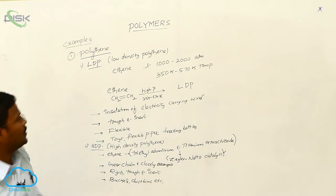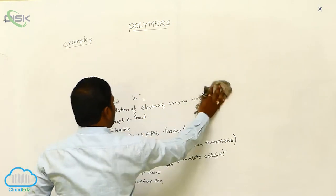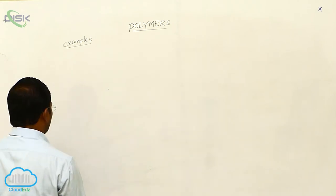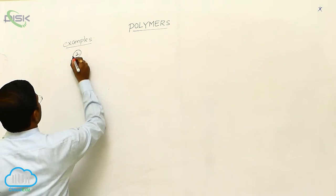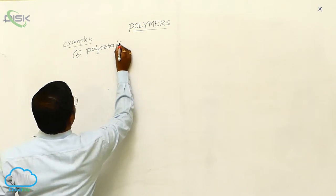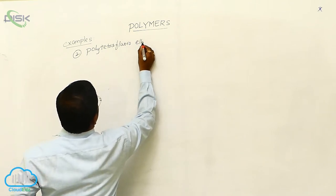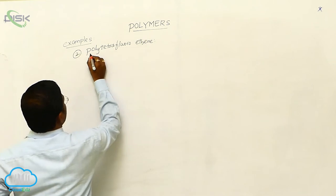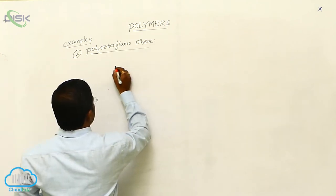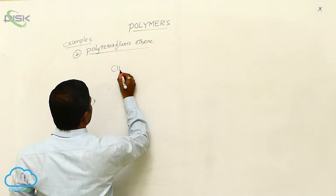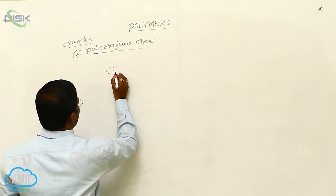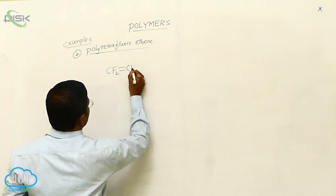Now let us learn one more example of a polymer produced by addition polymerization or chain growth polymerization of monomers. The second example is poly-tetrafluoroethylene. Ethylene is CH2=CH2; if we substitute the hydrogens with fluorine, we get CF2=CF2 — that is, tetrafluoroethylene, with a double bond between two carbons and two fluorine groups on each carbon.